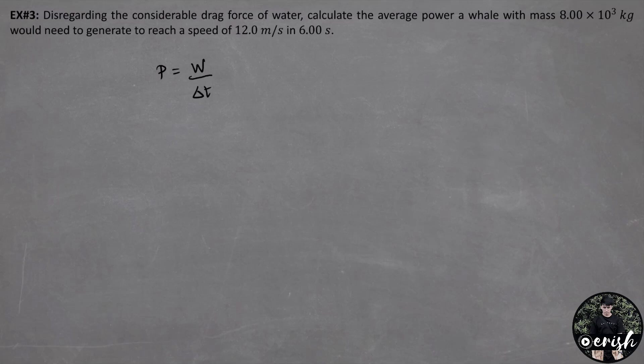Since the whale has a motion and it started from 0 up until it reached 12 meters per second in 6 seconds. So we calculate the change in kinetic energy of the whale by the work energy theorem. Work is equal to change in kinetic energy. And change in kinetic energy is equal to kinetic energy final minus kinetic energy initial.